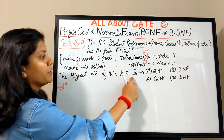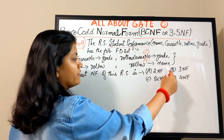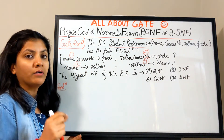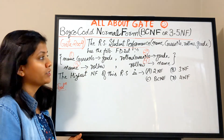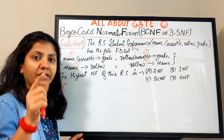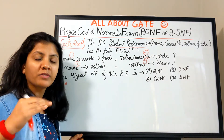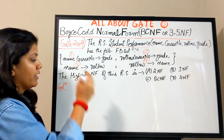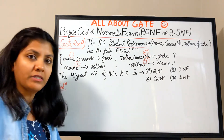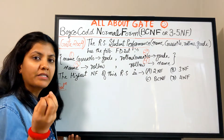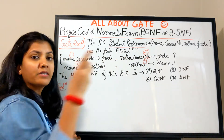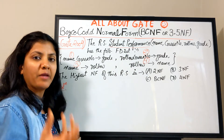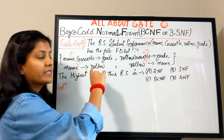The schema has four functional dependencies defined. The question asks: what is the highest normal form of this relation schema — 2NF, 3NF, BCNF, or 4NF? The highest normal form means that if it is in that form, all lower normal forms are satisfied by default. To solve this: first find all candidate keys using functional dependencies, then identify prime and non-prime attributes, then check the type of each dependency.